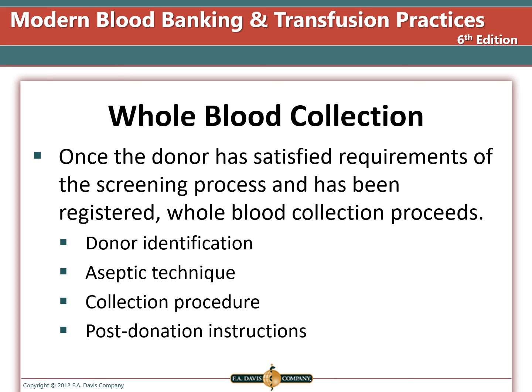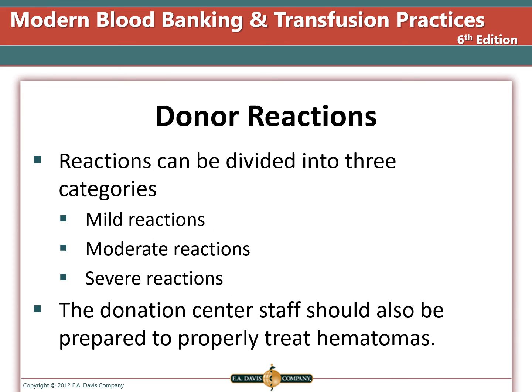Once a donor has been found acceptable for blood donation, the procedure includes donor identification, aseptic technique to prevent bacterial contamination, standardized collection procedures, and post-donation instructions to the donor. Donor reactions can be divided into three categories: mild reactions such as feeling faint, moderate reactions such as vomiting or fainting, and severe reactions such as seizures. The donor center staff should also be properly trained in the treatment of hematoma.